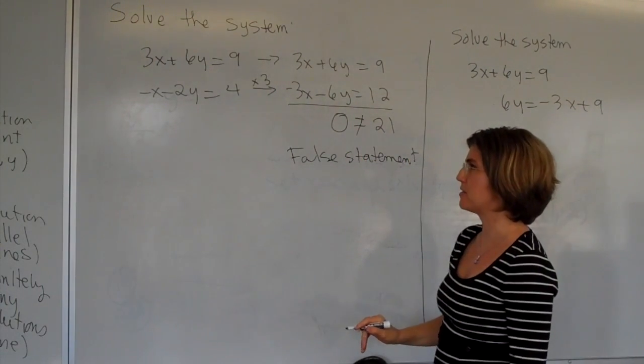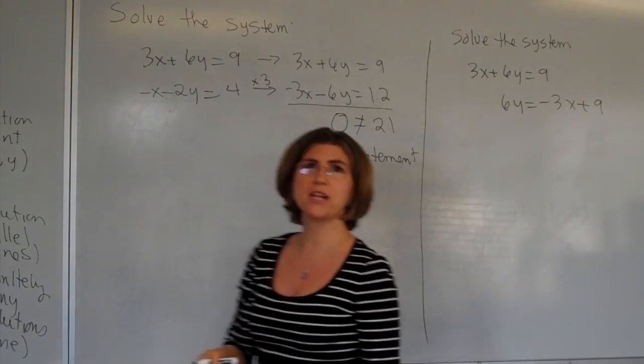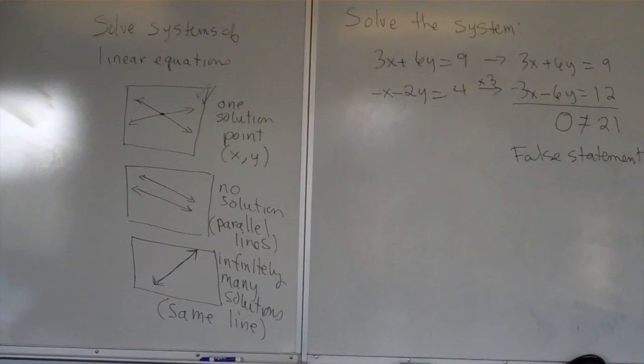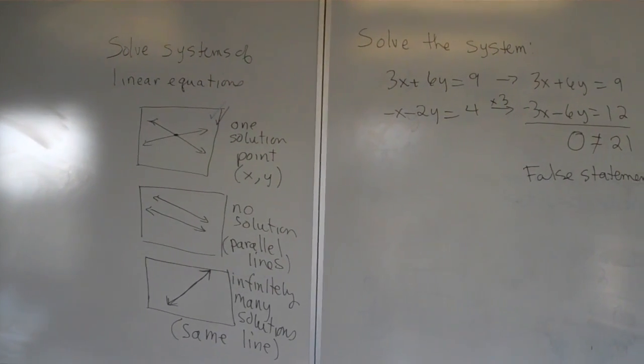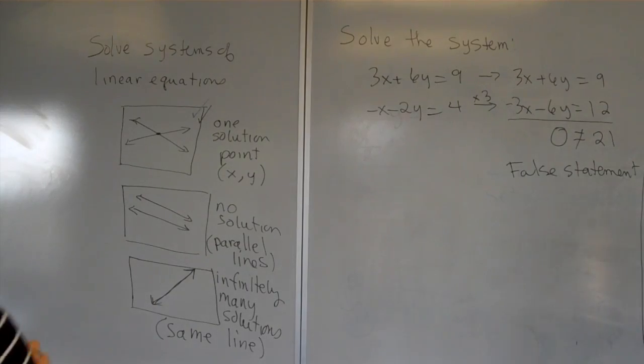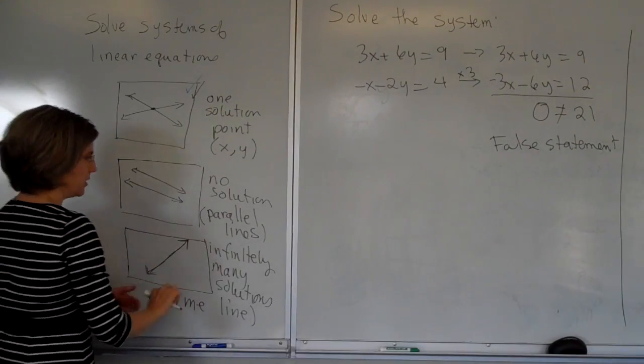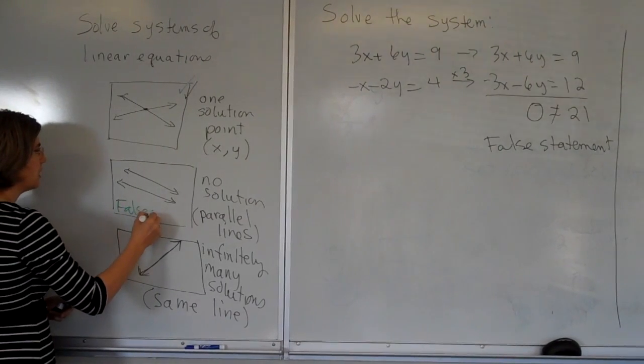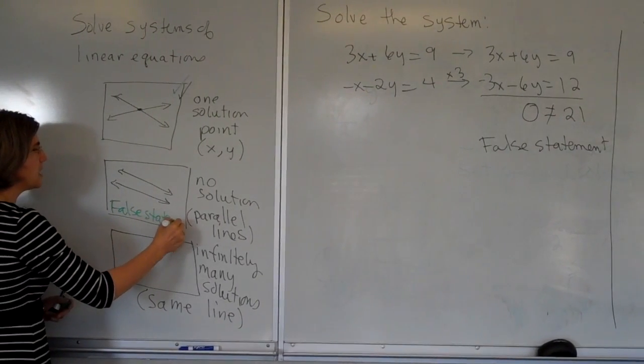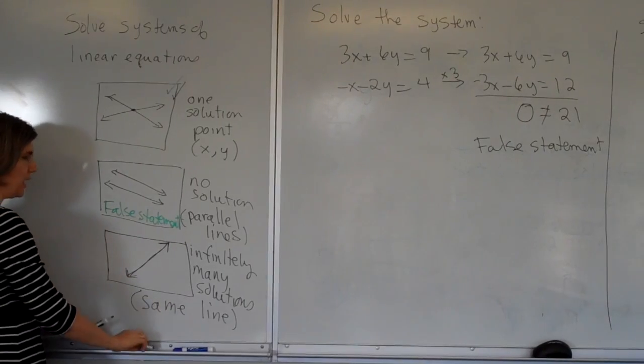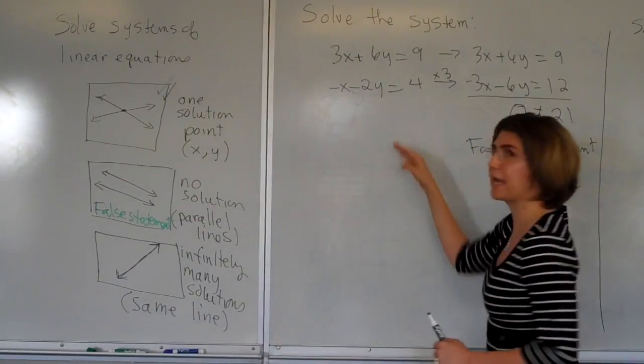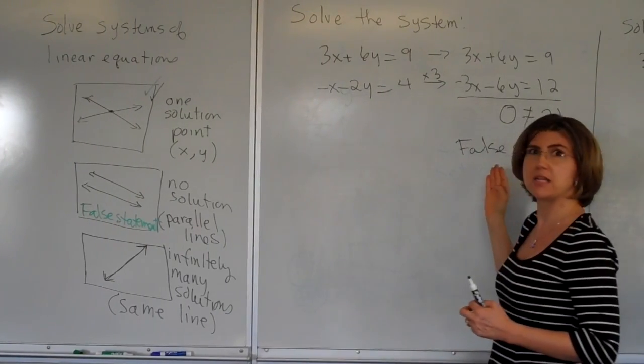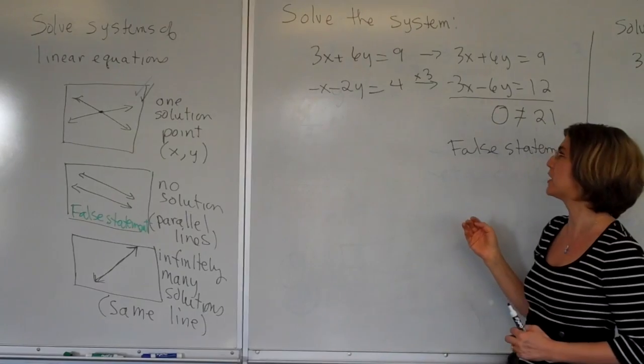And that is what happens whenever we have the situation that we have no solution. When we solve the system and all the x's and all the y's drop out, then we get no solution. So this is what happens when we get a false statement. Since both of the x and the y dropped out of here, I can't adjust the x and the y in any sort of way to make this true. This is patently a false statement, and there's no way to make it true.